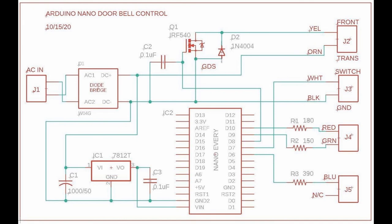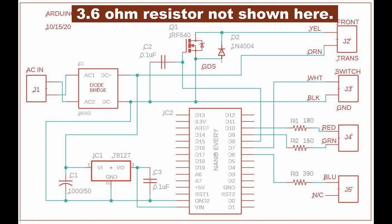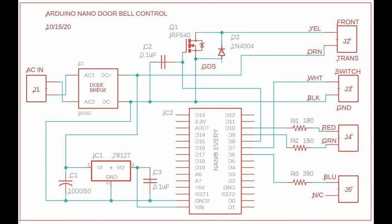A field effect transistor is used to drive this doorbell solenoid. I used a 3.6 ohm dropping resistor in series with the Bell solenoid to reduce the current draw.